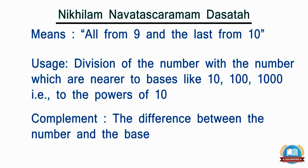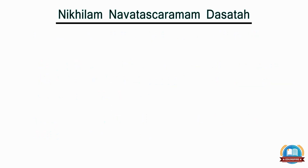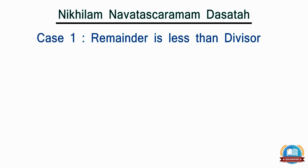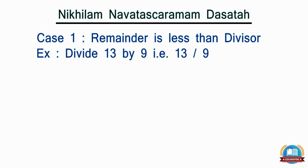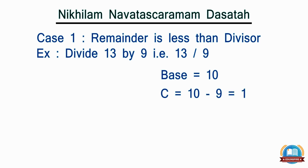Case 1: when the remainder is less than the divisor. Let's take the simple example of dividing 13 by 9. Here the base is 10, so the complement becomes 10 minus 9, that is 1.